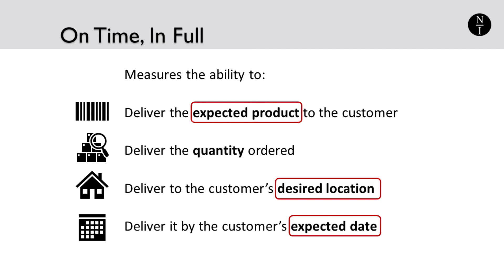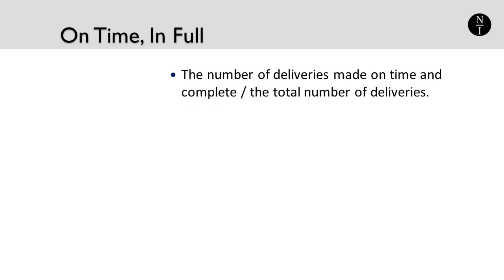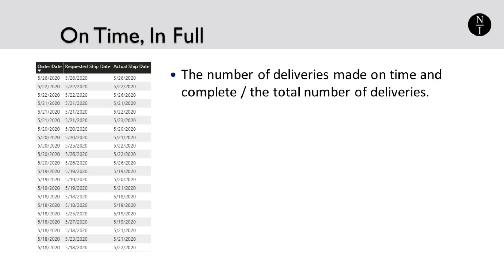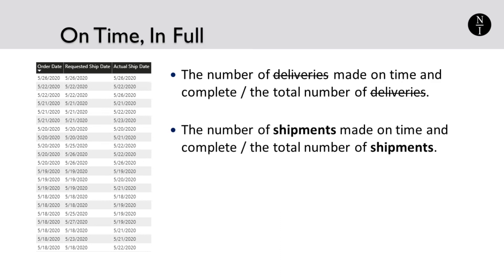The supply chain industry has not settled on an exact formula for OTIF, but in general the formula is the number of deliveries made on time and complete divided by the total number of deliveries. In many cases, such as the company data on the screen, the company doesn't operate based on delivery dates but rather on shipping dates. In this case, we base the OTIF metric on the customer's desired ship date and compare that to the order's actual ship date.